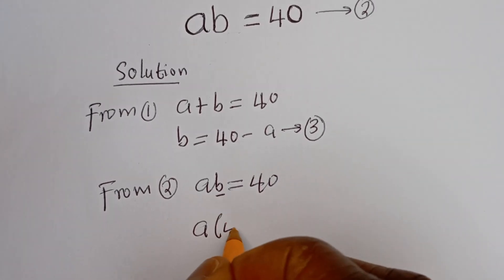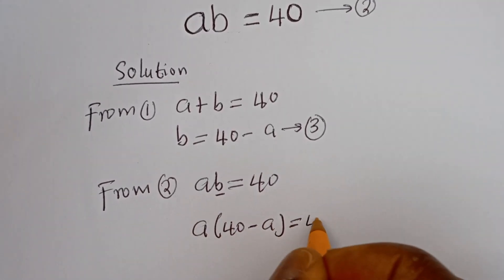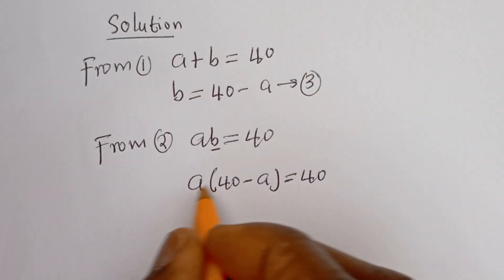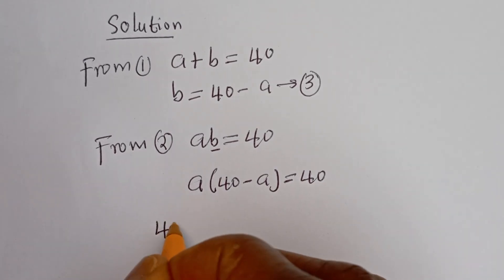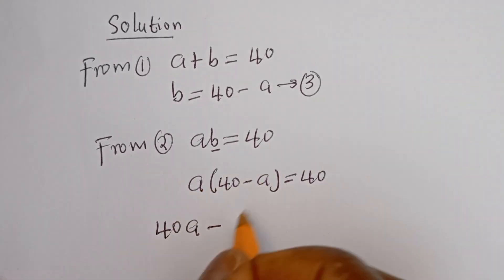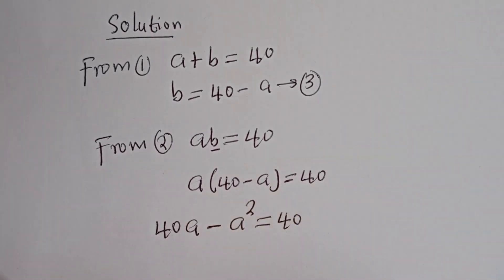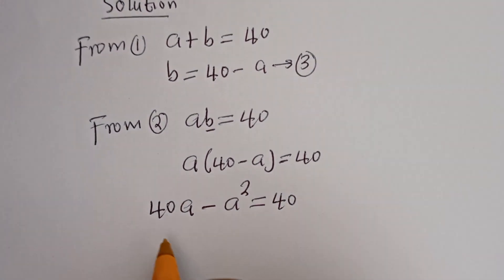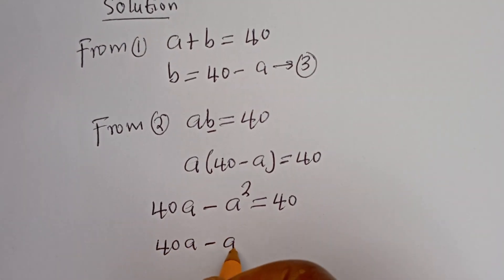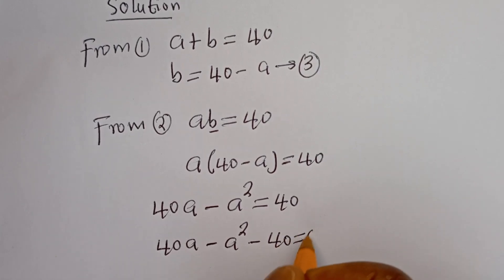A times (40 minus A) is equal to 40. Opening the bracket: A multiplied by 40 is 40A, minus A multiplied by A is A squared. So we have 40A minus A squared minus 40 is equal to 0.